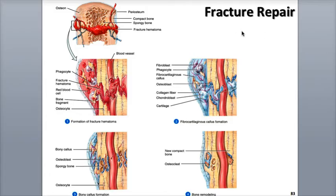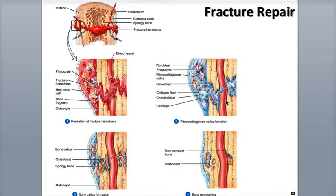Bone fracture repair goes through four phases: the reactive phase, which involves the formation of a fracture hematoma or blood clot; and a reparative phase involving the formation of a fibrocartilaginous, or soft callus.